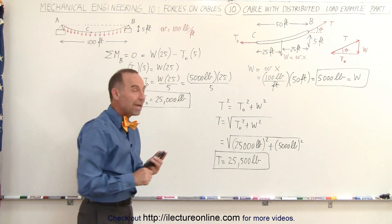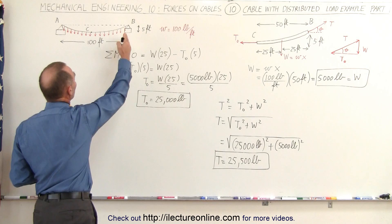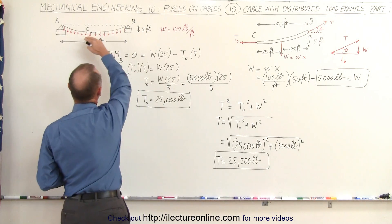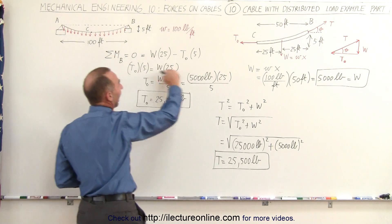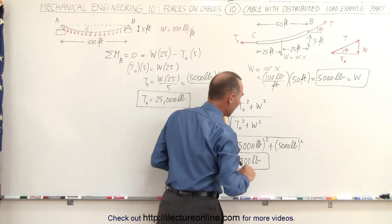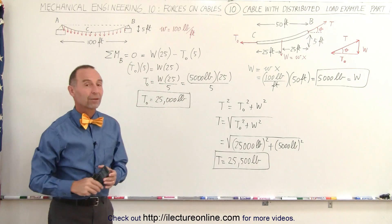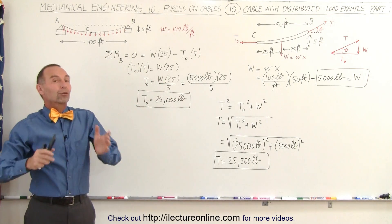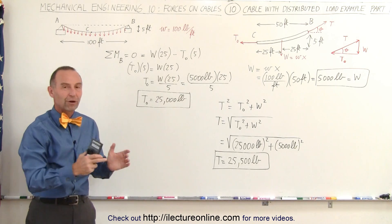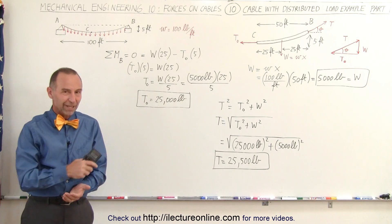We now have all the major parameters of a hanging cable with a distributed load: T-sub-zero, the horizontal tension component; W, the load on half the cable from the lowest sag point to support B; and T, the tension at the support, found using the Pythagorean theorem. In part two we'll tackle a few more aspects of this cable problem, but this gives you a solid foundation for dealing with cables that have distributed loads.